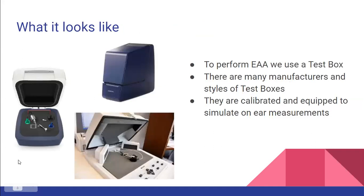The equipment used to run the test is called a test box. There are several manufacturers, and the boxes can look different, but they all have the same components. The test boxes themselves are calibrated regularly, and the purpose of the test box is to replicate on-ear use and to give data on the function of the hearing aid being tested.